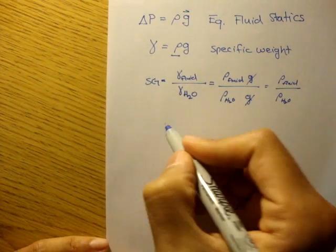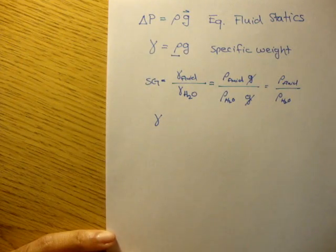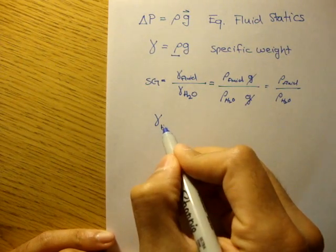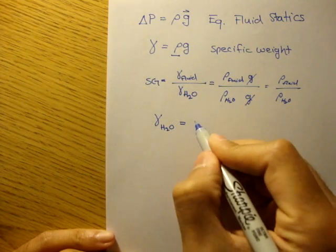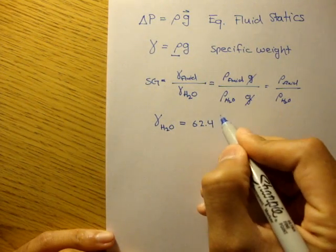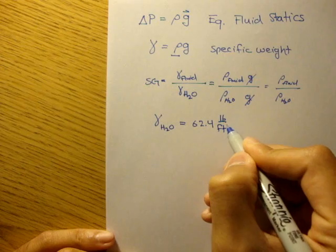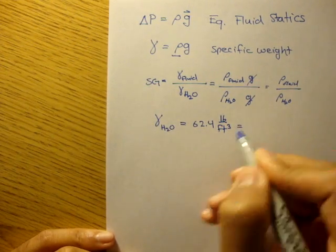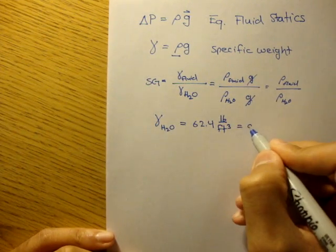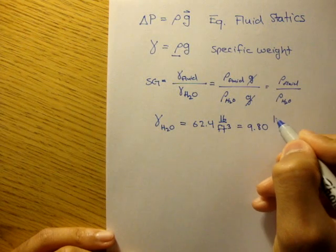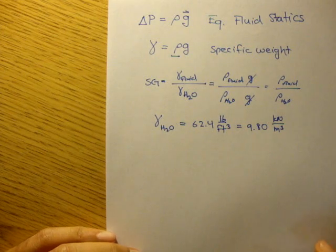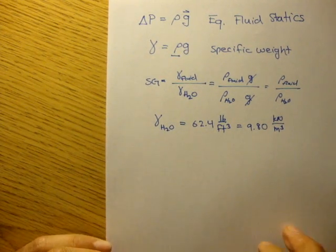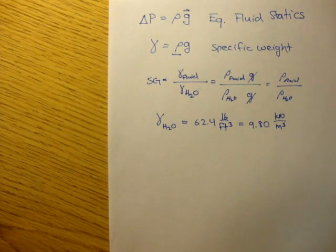Now, some common gammas, or specific weight of water, in the U.S. customary units, I believe it's 62.4 pound per foot cubed. And in the metric unit, I believe it's 9.80 kilonewtons per meter cubed. So, if I were you, I would memorize these two, because this is used a lot in fluid statics.